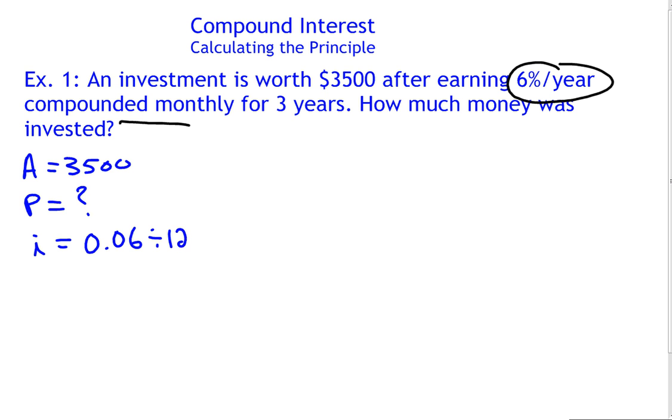Then we need to divide by 12 to figure out the rate per compounding period. So if you take 0.06, divide it by 12, we get 0.005.